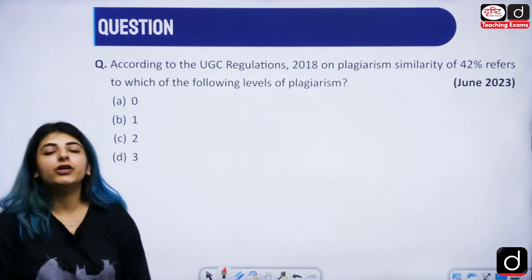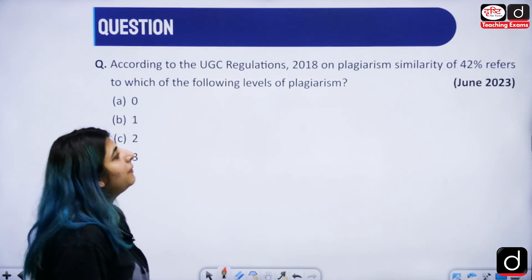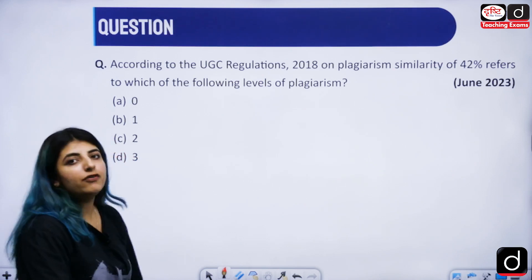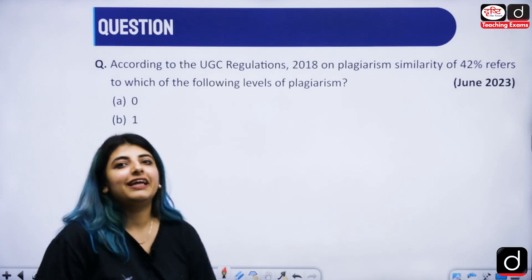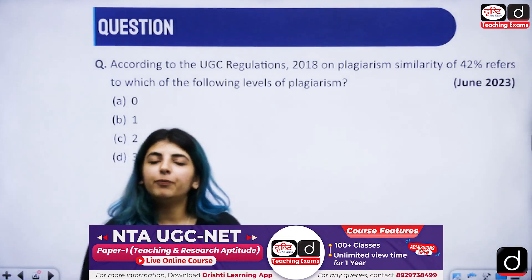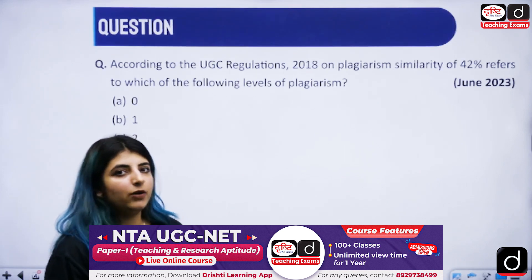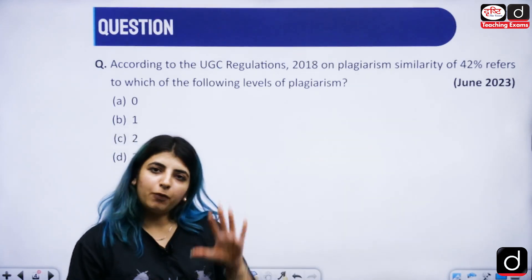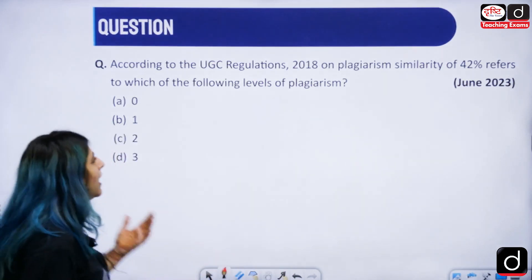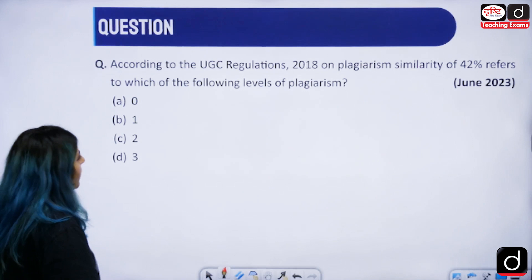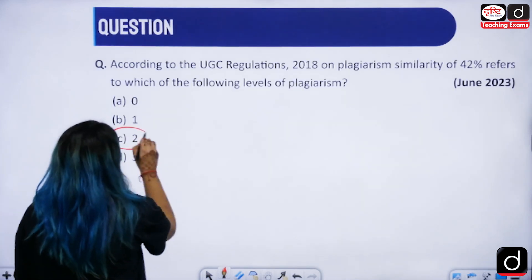The first question is according to the UGC Regulations Act 2018 on plagiarism similarity of 42 percent refers to which of the following levels of plagiarism. You can pause your videos whenever you see a question. The answer to this particular question is option C that is level 2.